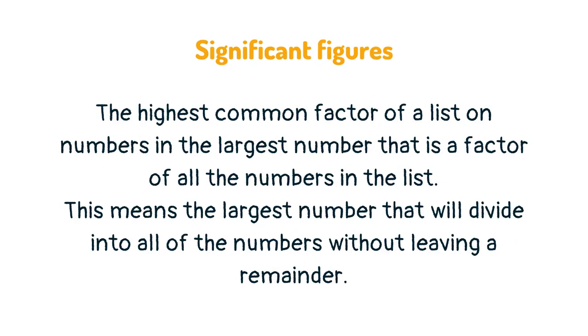The highest common factor of a list of numbers is the largest number that is a factor of all the numbers in the list. This means the largest number that will divide into all of the numbers without leaving a remainder.